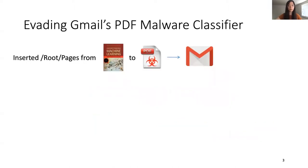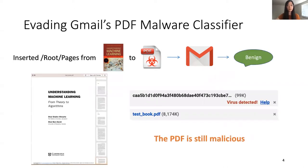As an example, we can evade Gmail's PDF malware classifier using the following action. We inserted pages from a machine learning textbook into a PDF malware and uploaded the malware variant as an attachment to Gmail. While Gmail can detect the original PDF as malicious, the malware variant is classified as benign.